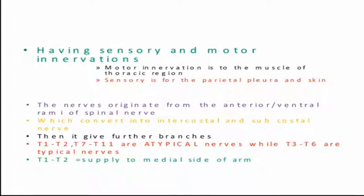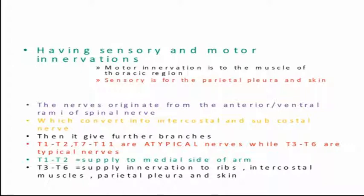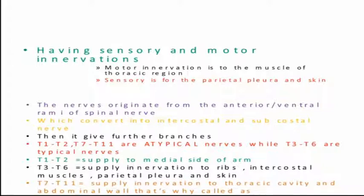The typical nerves T3 to T6 directly supply the muscles of the intercostal region. The atypical nerves T1 and T2 supply the peripheries and intercostal area as well — for example, T1 and T2 supply the medial side of the arm and the chest region. T3 to T6 supply innervation to the ribs, intercostal muscles, and parietal pleura and skin, while T7 to T11, also atypical nerves, supply innervation to the thoracic cavity and abdominal wall.